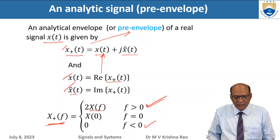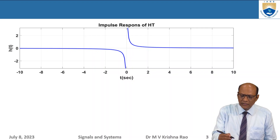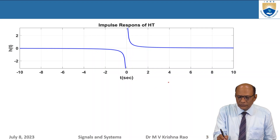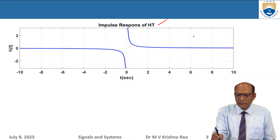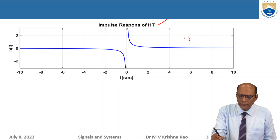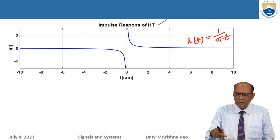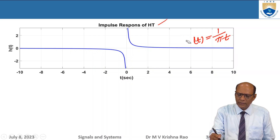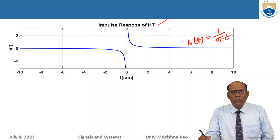Now let us note the impulse response of the Hilbert transform. The impulse response h(t) equals 1/(πt). This is inversely proportional to time. At t equal to zero this becomes infinite and is not defined, but it is defined for values slightly less than or greater than zero.